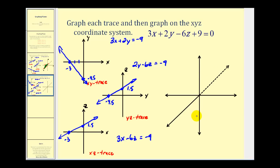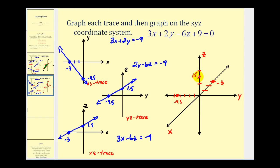Now we'll go ahead and sketch it on the three-dimensional coordinate system. Here are our x, y, and z-axes. The x intercept is negative three, so we'll go back three units. The y intercept is negative four point five, so we'll go left four and a half units. And then the z intercept is positive one point five — I'm going to adjust the scale so we can make a nice triangle, calling this one and this two, so here's one point five. We'll form a triangle using these three points — the sides of the triangle represent our traces. If we shade this triangle, this represents where the given plane intersects each axis. Okay, that's going to do it for this video. I hope you found this helpful.